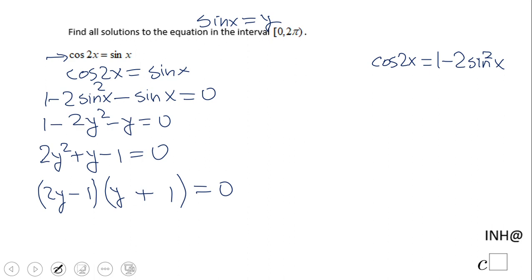So now we have two equations, right? 2y minus 1 equals 0, which is going to give us y equals 1 half. And y plus 1 equals 0, which is going to give us y equals negative 1.